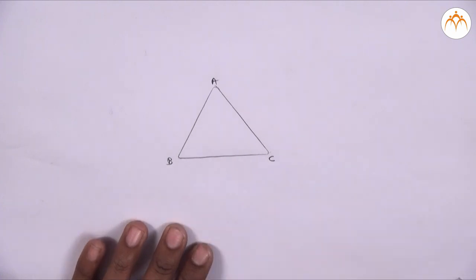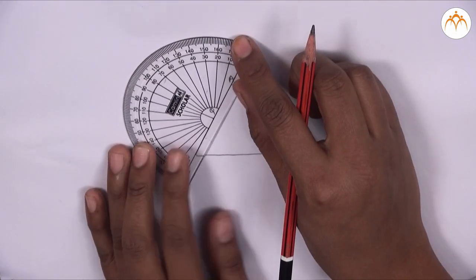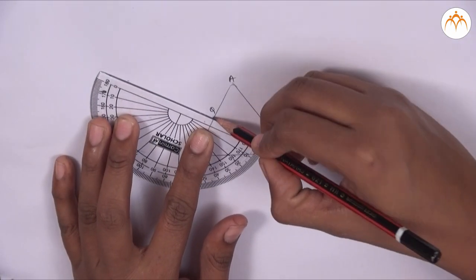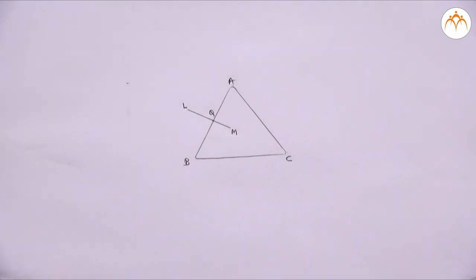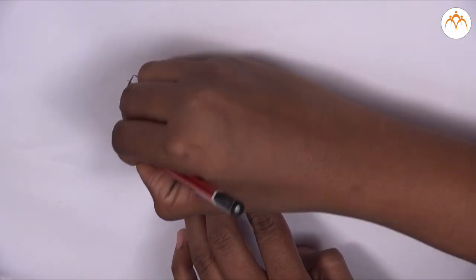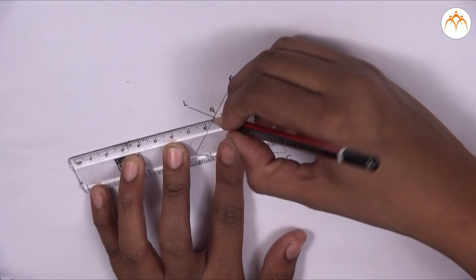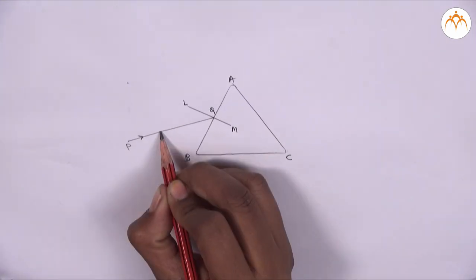Remove the prism and draw a normal LM at point Q on side AB. Draw ray PQ making an angle of 30 degrees with the normal. Fix two pins P1 and P2 on ray PQ.